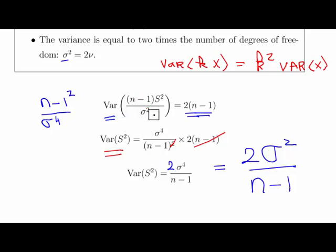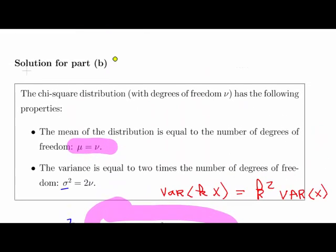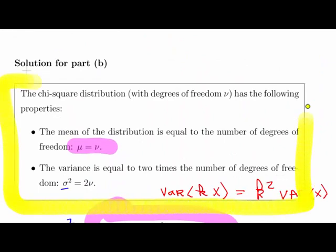So fundamentally, what it was about was just really using this identity here, the one that we just introduced previously, but also knowing about the chi-squared distribution and the variance and the expected value and how they really relate to the degrees of freedom. All right, we'll leave it there.